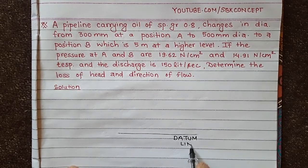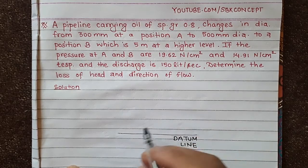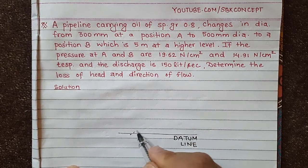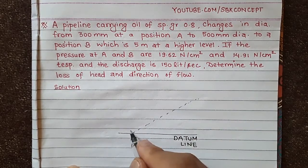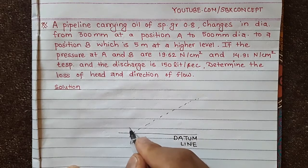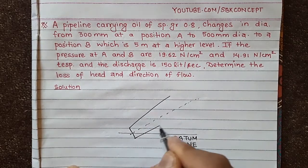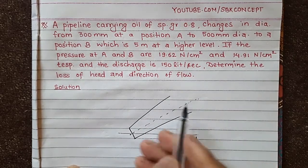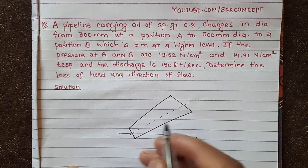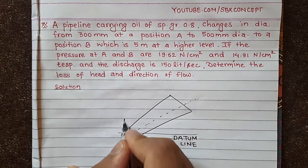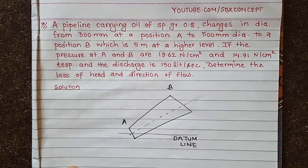We draw the datum line. We mark section A and section B on the figure.